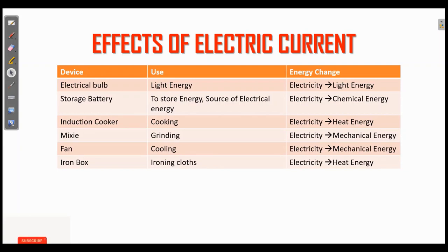Mixer: grinding, electricity to mechanical energy. Fan: cooling effect, electricity to mechanical energy. Iron box: ironing the cloth, energy change is electricity to heat energy.